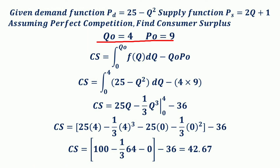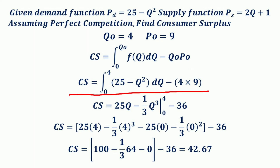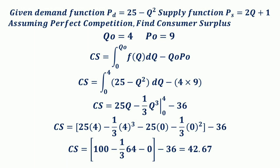After getting the equilibrium quantity and price, which are 4 and 9 respectively, the next step is to substitute these values and the demand function into the consumer surplus formula. Note that for consumer surplus, the demand function is always used. So consumer surplus equals the integral from 0 to 4 of (25 minus Q²) dQ, minus 4 times 9, where 4 times 9 equals 36.